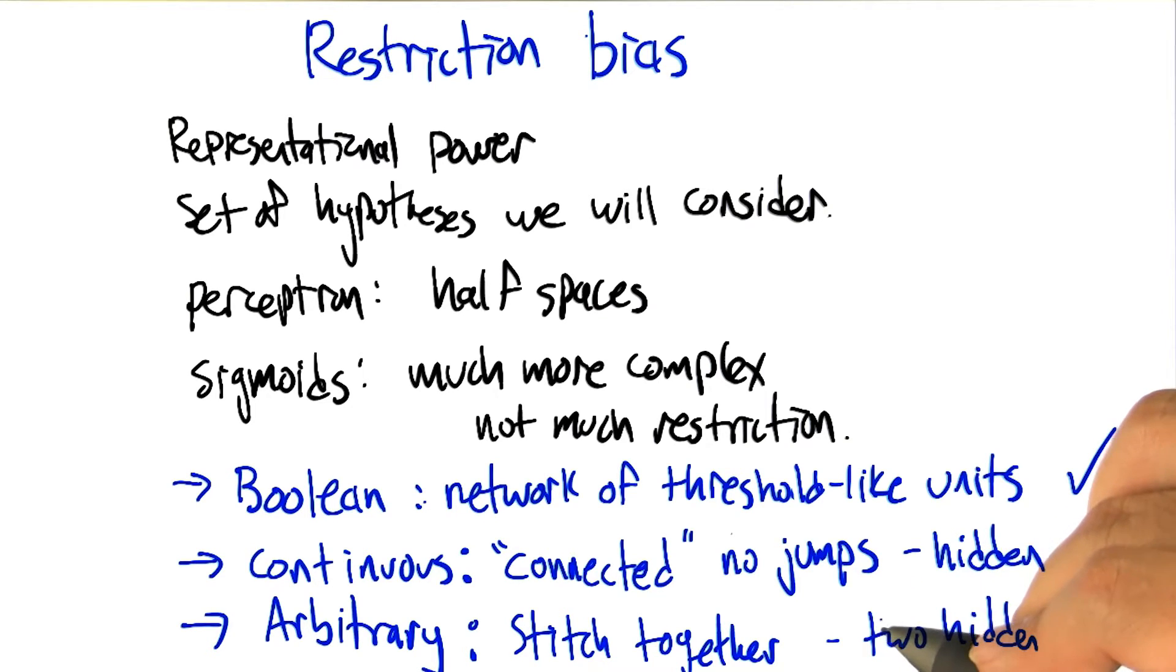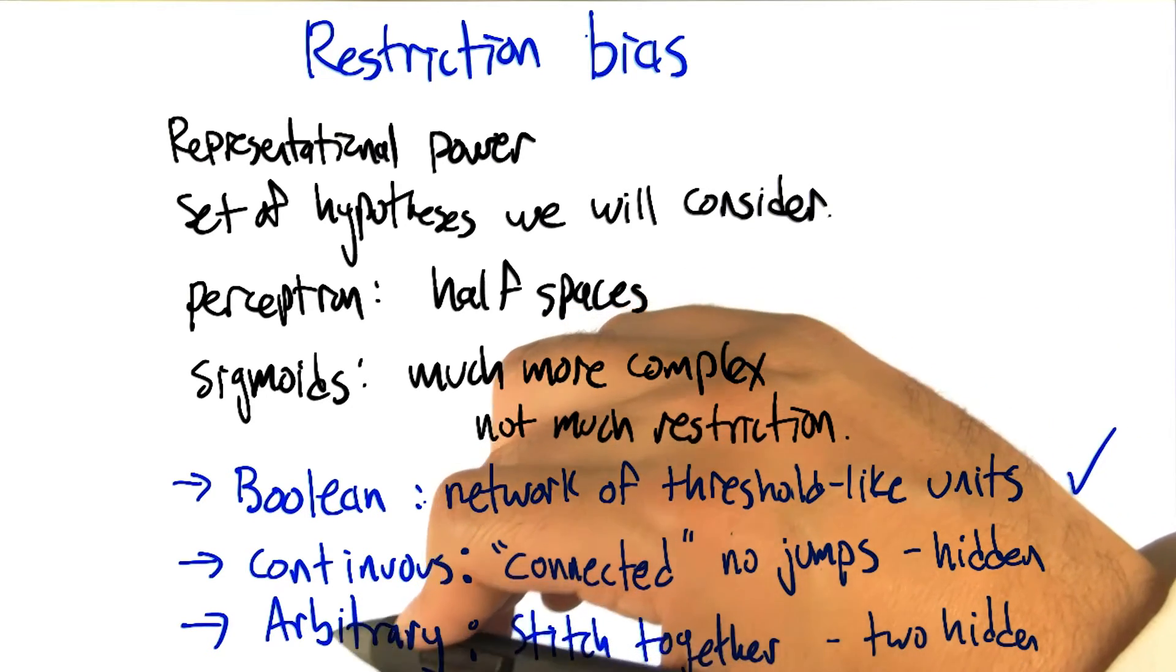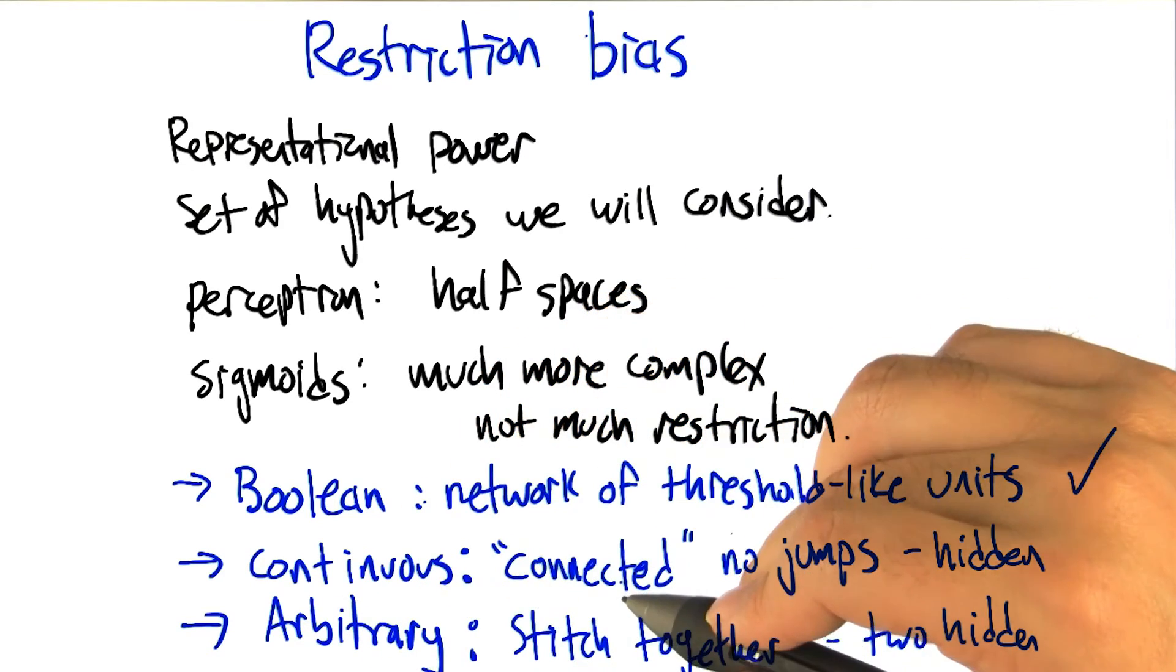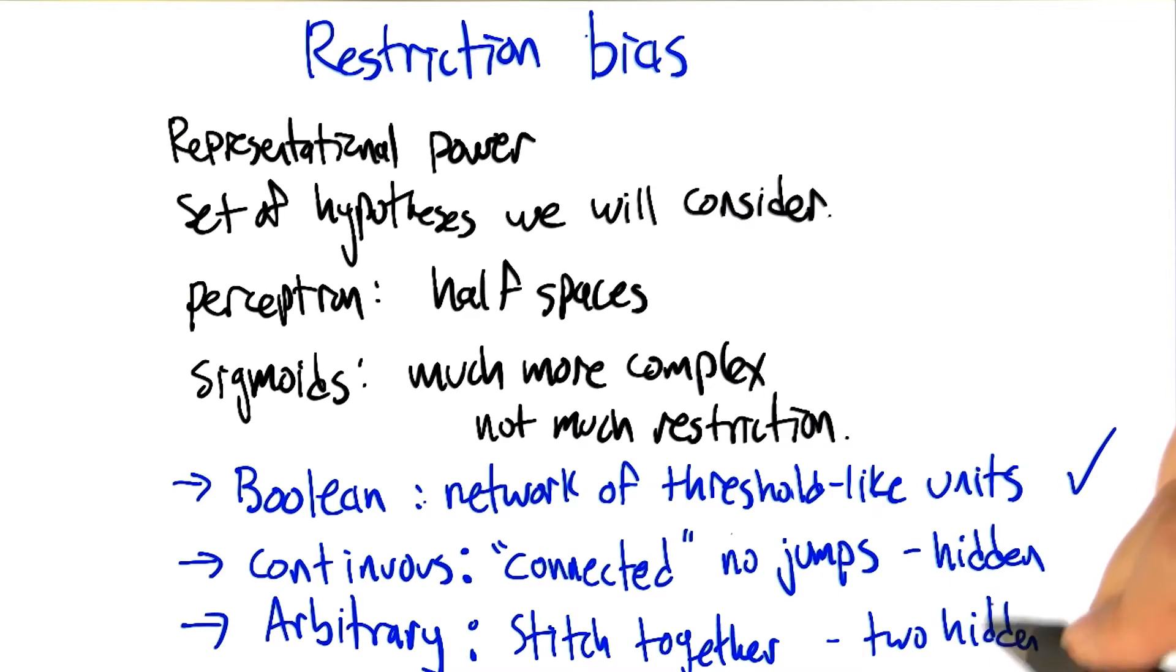If it's arbitrary, we can still represent that with a neural network. Any mapping from inputs to outputs we can represent, even if it's discontinuous, by just adding one more hidden layer. So two total hidden layers. And that gives us the ability to not just stitch together these patches at their seams, but also to have big jumps between the patches. So in fact, neural networks are not very restrictive in terms of their bias, as long as you have a sufficiently complex network structure, right? So maybe multiple hidden layers and multiple units.